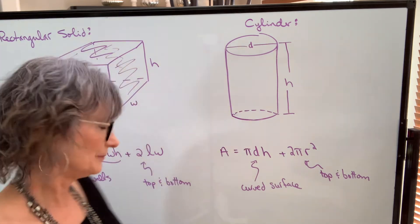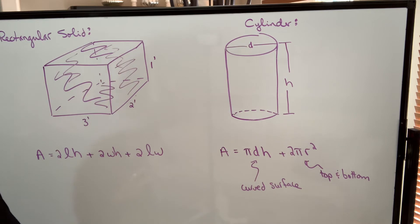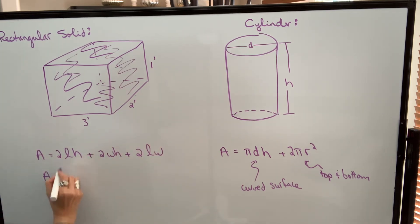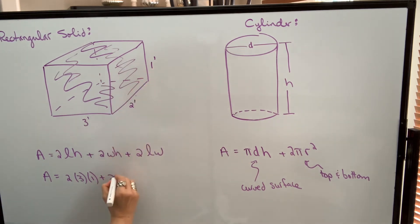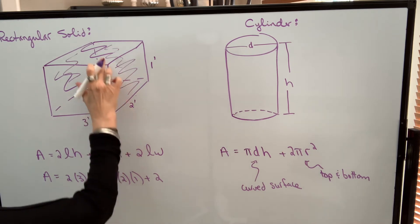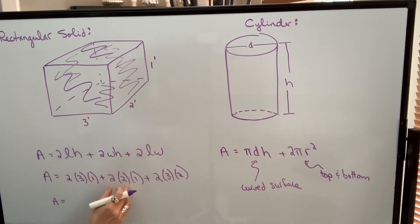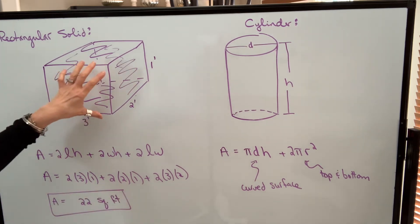Let's do an example of each of these. If I was going to find the area of this rectangular solid that has a length of three feet, a width of two feet, and a height of one foot, I'm going to keep my dimensions in feet, so my area will be in square feet. This area will be three times one, and there are two of them. The side area will be two times one, and there are two of those. The base has an area of three feet by two feet, and so does the top — two of them. So we're going to get 6 plus 4, which is 10, plus 12, which is 22 square feet — the total surface area of that rectangular solid.